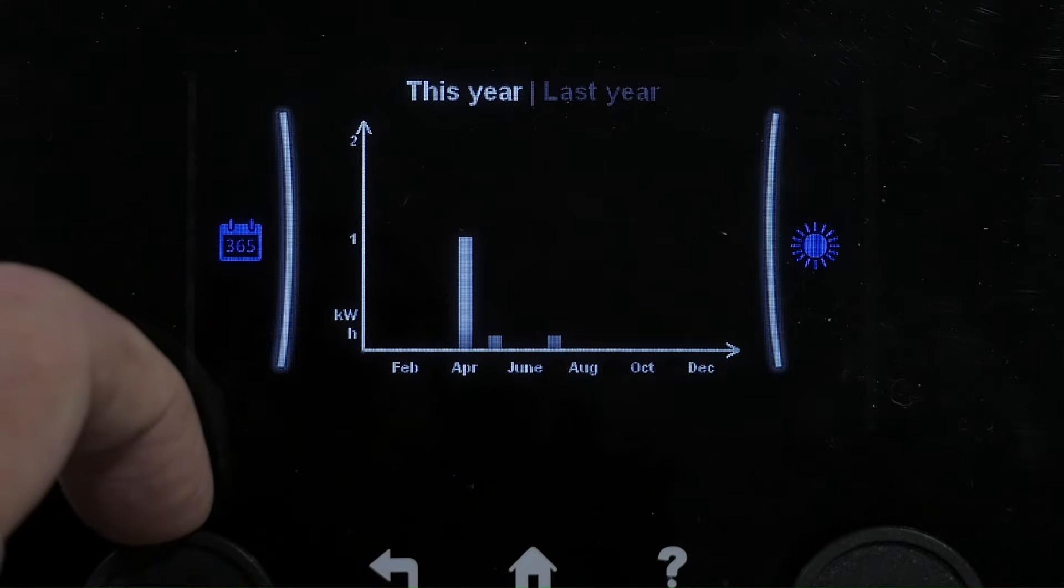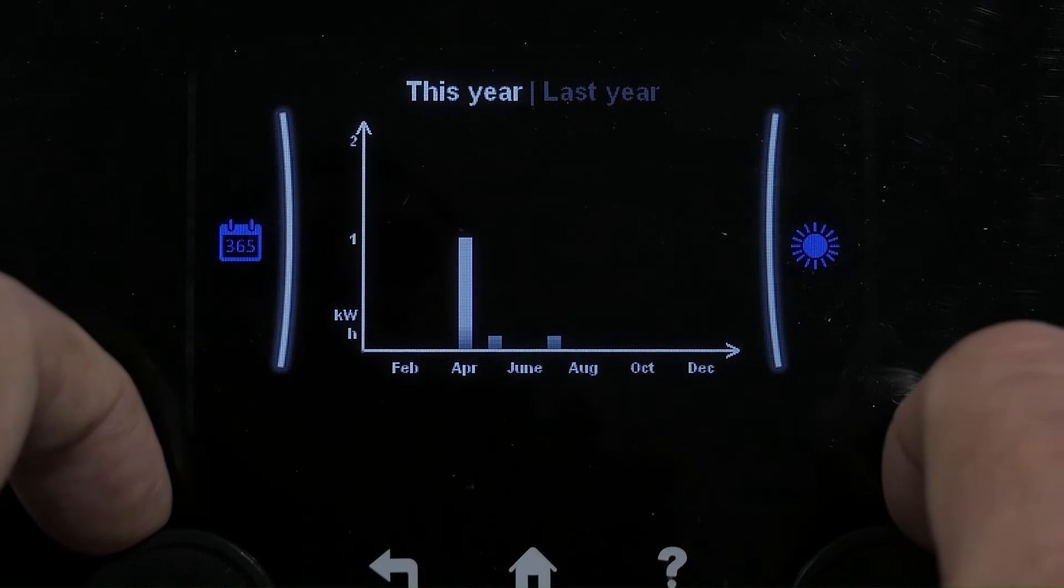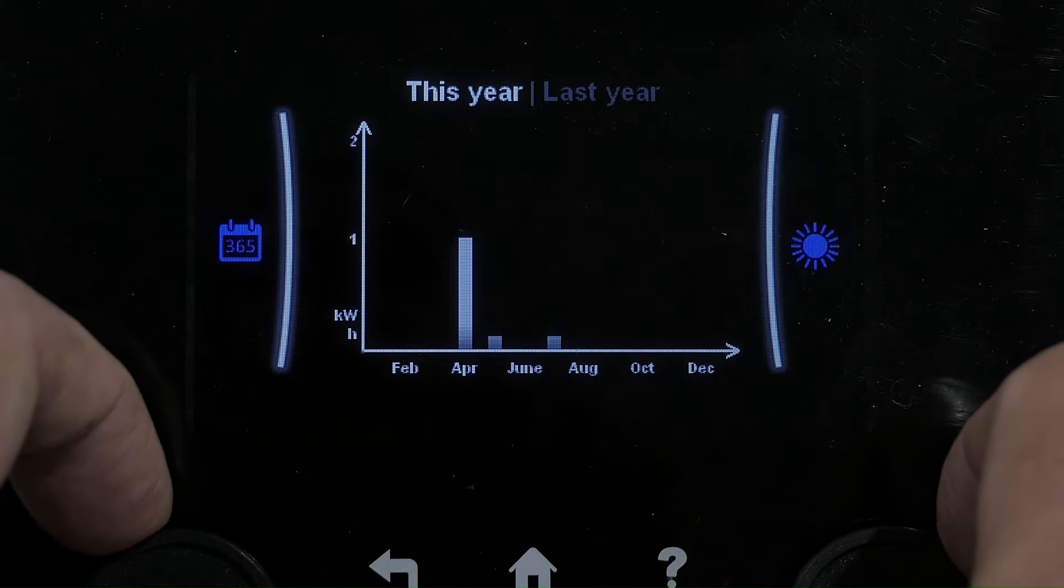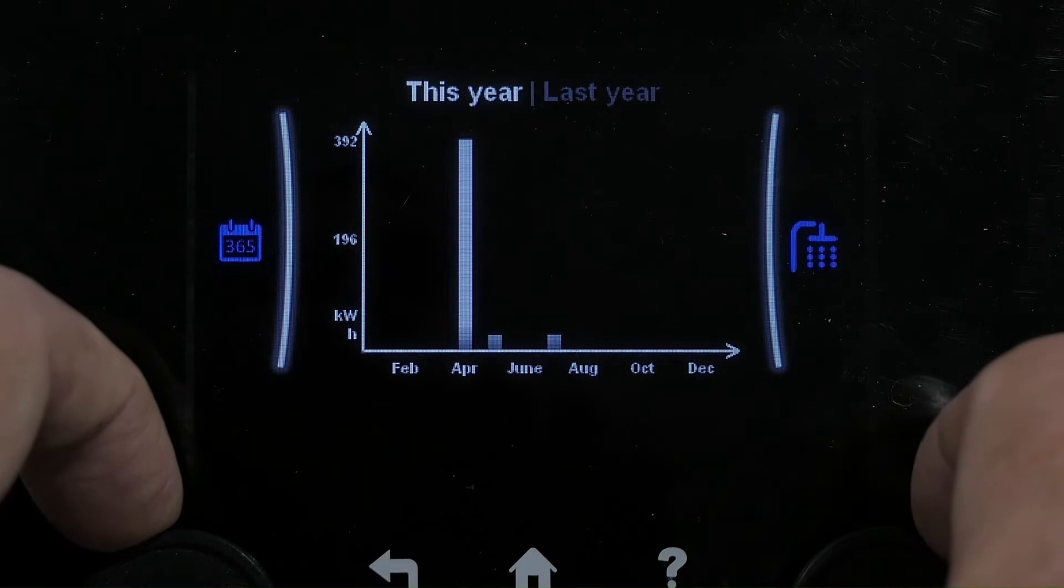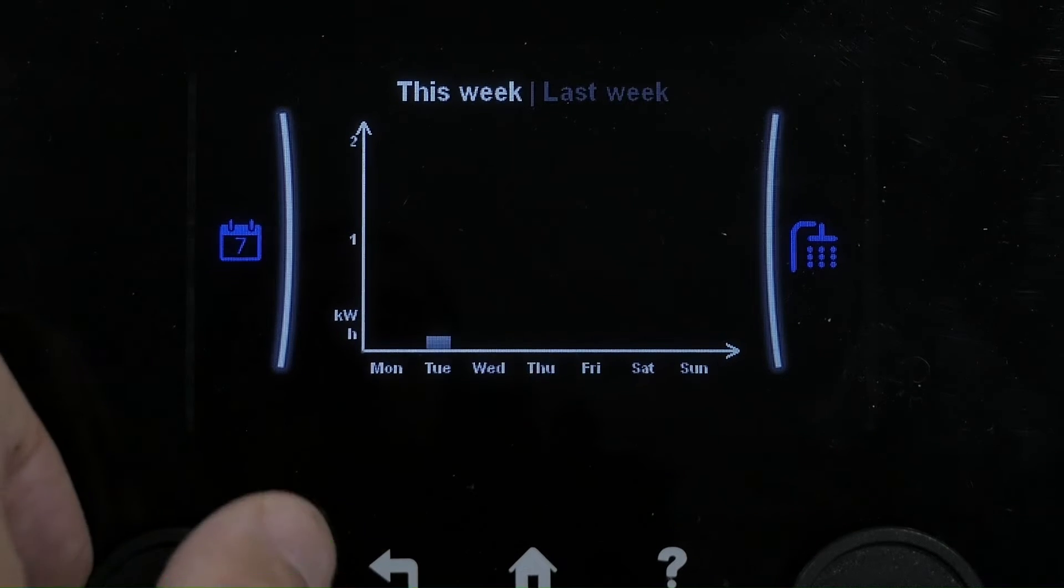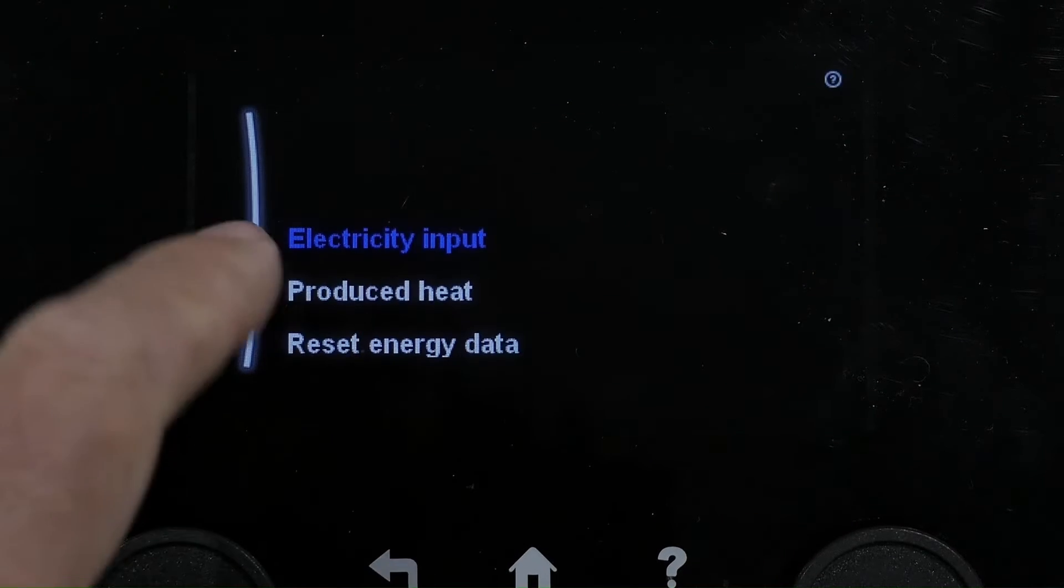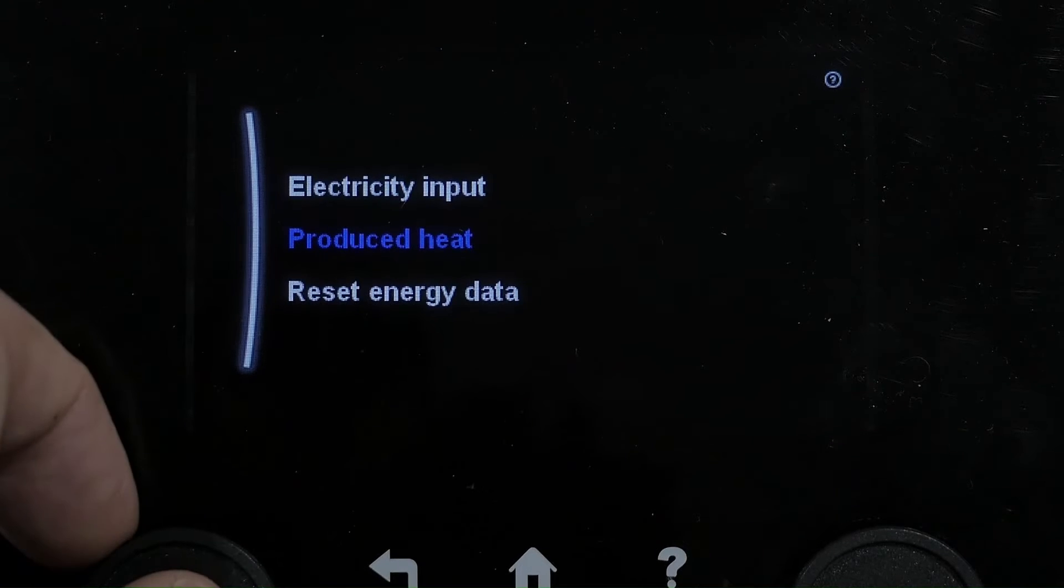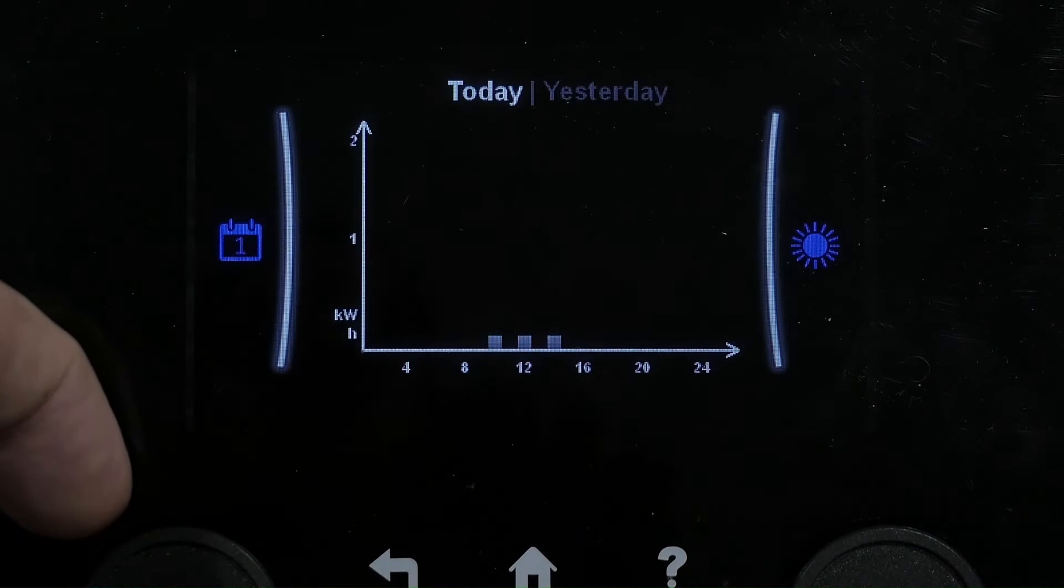You also have the ability to switch between heating and hot water - you can see the symbol change there. That shows your electricity input and then your actual output produced by the unit.